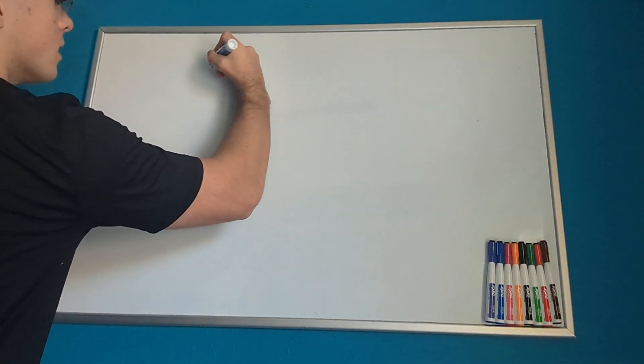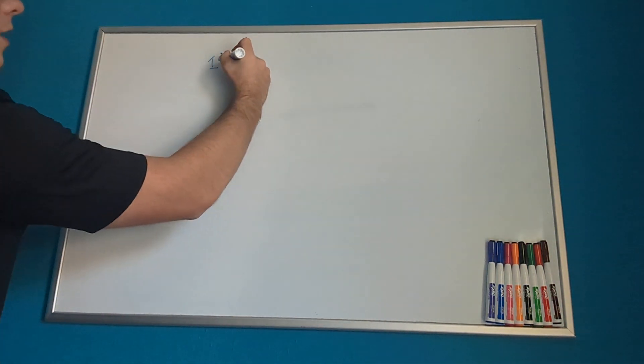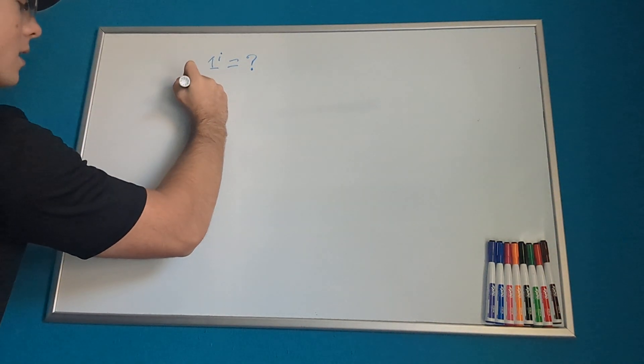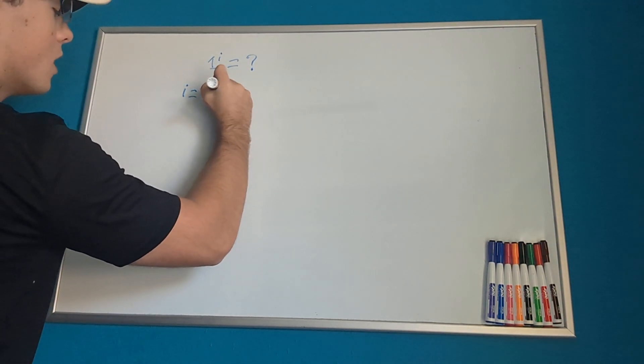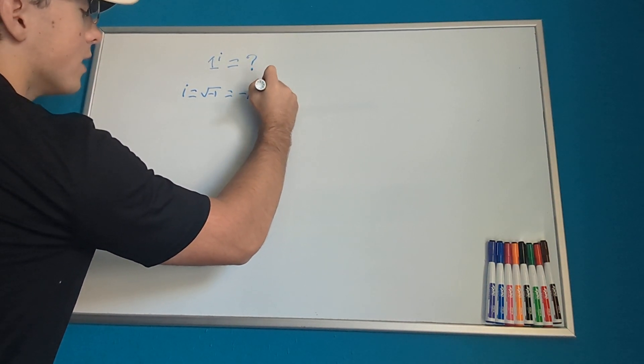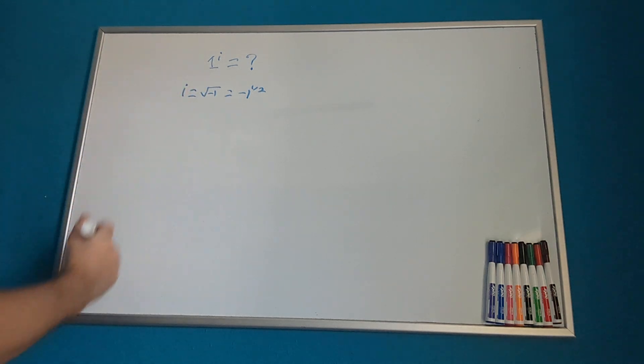So we have 1 to the power i, and we want to figure out what that equals. Well, we know i equals the square root of negative 1, which is also just negative 1 to the power of 1 half. So let's try to put that in for i up there.